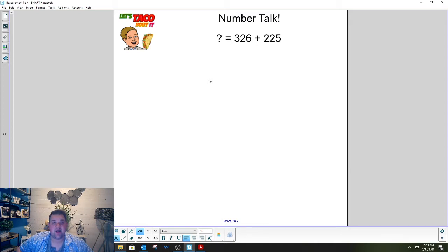We're going to start as always with number talk and number talk will be a little bit different today. Instead of sharing out our thinking as a class, you'll just enter in your answer and how you solved it into PlayPosit and that's how you'll share your thinking and I'll be able to see it once you complete it. So the first one we're going to do is 326 plus 225. I want you to enter into PlayPosit what you think the answer is and how you solved this in your head. Go ahead and do that now.